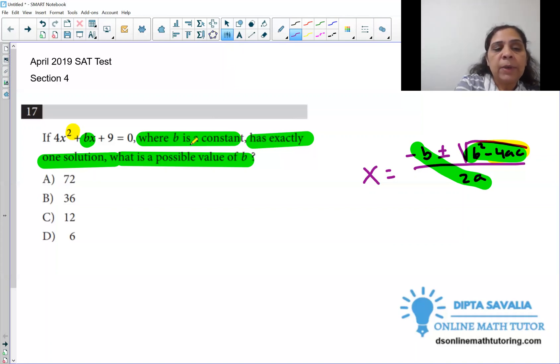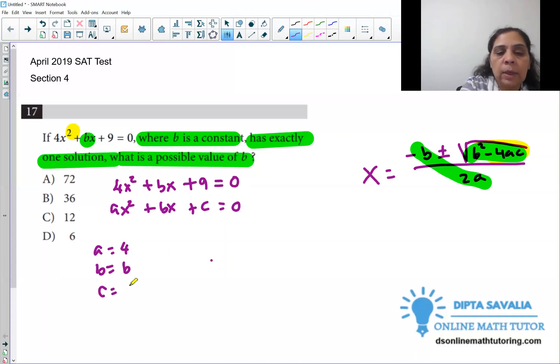So first thing, what is discriminant? We will just compare this equation with standard form. And we have to make sure we have to make it equal zero. And then you can compare with standard form ax² + bx + c = 0. So what is your a is? A is 4, b is b, and c is 9. Right? So this value, we will just plug in discriminant. What is our discriminant is b² - 4ac. It must be zero.